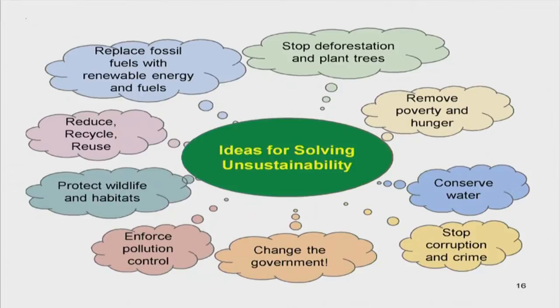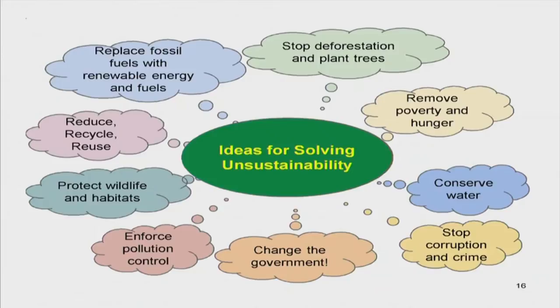When I teach in my class and ask students to do this exercise, they come up with a long list which looks something like this. Things like: stop deforestation, replace fossil fuels with renewable energy, reduce, recycle, reuse. How many are familiar with these 3 R's in the context of waste management? Protect wildlife and habitats. And there are some things on the social side: remove poverty and hunger, because unless you remove poverty, people will be forced to turn towards deforestation and damaging the environment. If everybody is well fed, nobody is going to go on damaging nature.